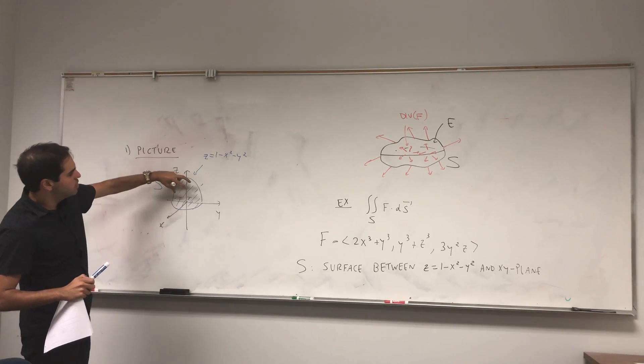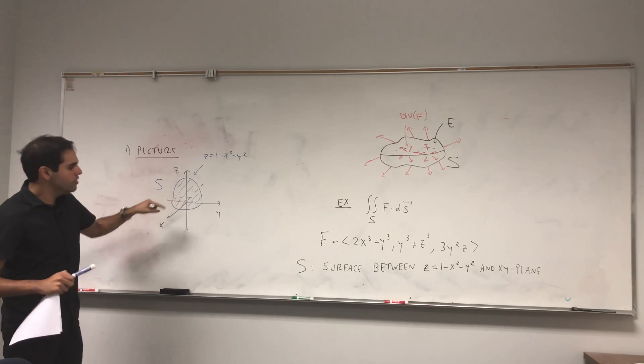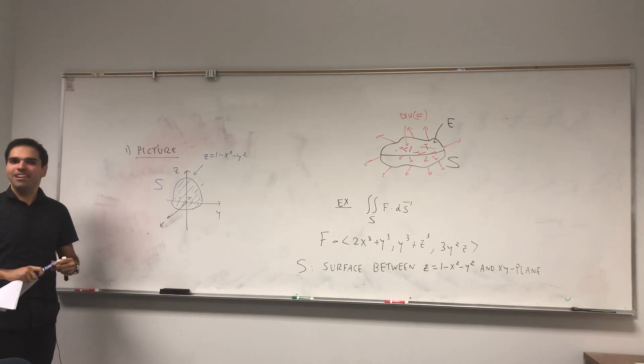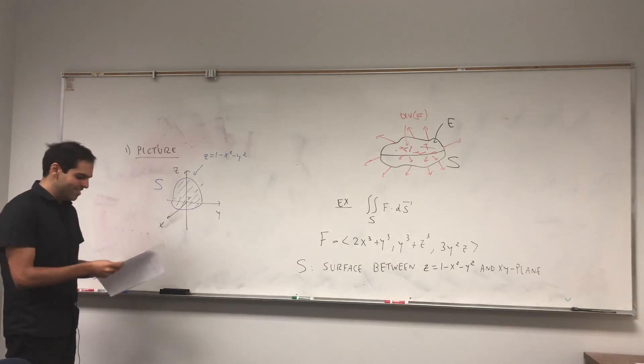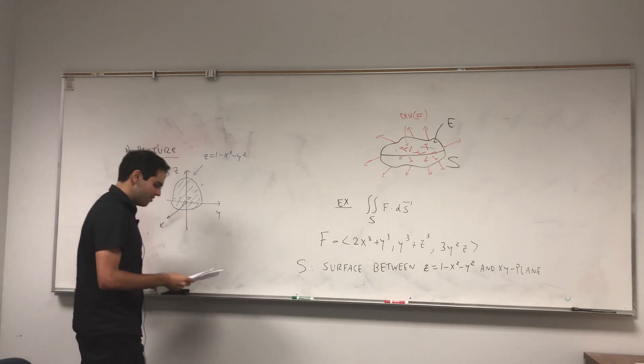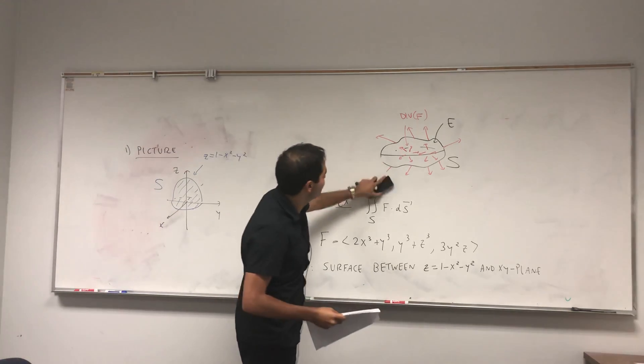Not only would you have to do that, you would have to calculate the surface integral of two parts of that surface - on this paraboloid but also on the disk below. So it's very painful. Unless you like to torture yourself, I would not recommend doing that. Instead, let's use the divergence theorem and you'll see it becomes much easier.